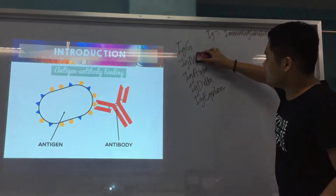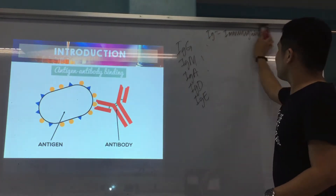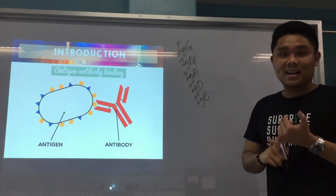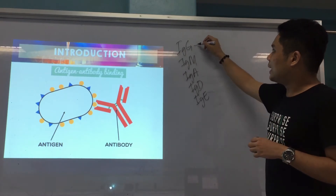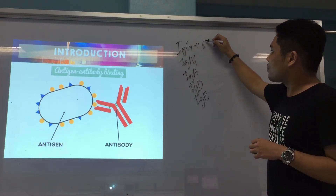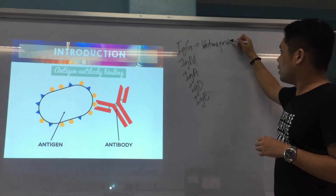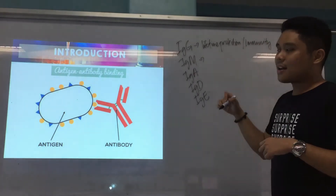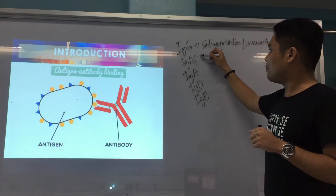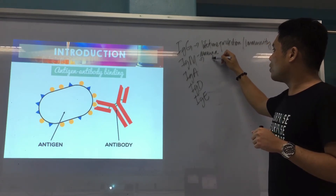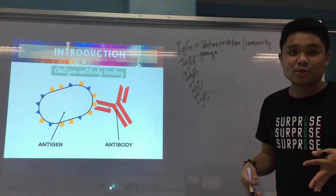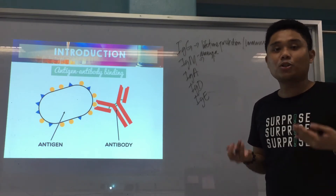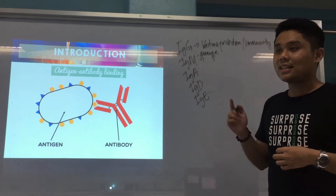For IgG, it is considered to be the most abundant antibody in the body, and it's usually the antibody that will give you lifetime protection or immunity. For IgM, it's usually the antibody that increases first — it's the first antibody to increase in primary infection. So if you just newly encountered an infection, it's the first antibody to rise — IgM.